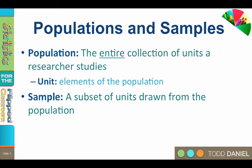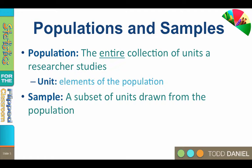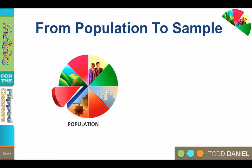A sample is a smaller but hopefully representative subset of units drawn from the population of interest. Subjects are participants in the sample. APA style is to call people participants. So if you're studying people, your subjects are participants. But if you're studying hibiscus trees, then your participants are subjects.